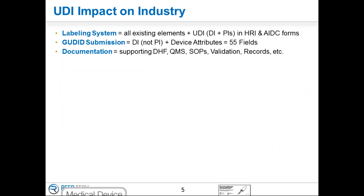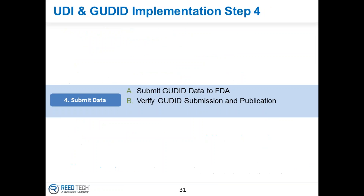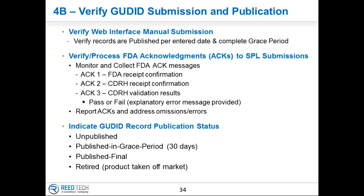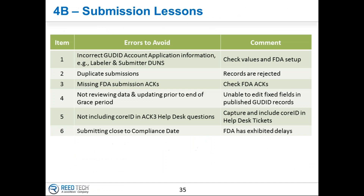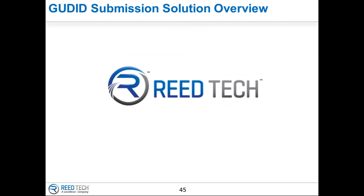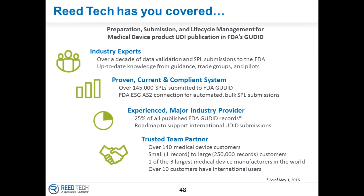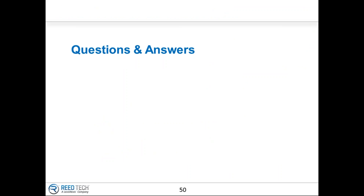Deborah again: if the product is identified with a serial number and that serial number can be internally matched with the manufacturing date, does the manufacturing date also need to appear on the device label? No, it does not. That goes back to the original discussion — if the label did not originally have the date on it, there's no reason to add it. If there's an internal mapping that takes the serial number and returns the date, there's no reason to add that to the label.